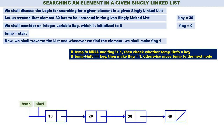Temp is not equal to null because temp is containing the address of the first node 10. Flag is not equal to 1. Therefore check the condition: temp of info is equal to key. What is temp of info right now? 10. What is key? 30. 10 is not equal to 30. Therefore temp is equal to temp of next.